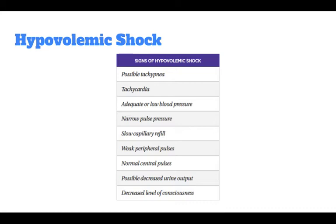While volume repletion is somewhat straightforward in adults, great care must be taken when administering intravenous fluids to children and infants. Careful estimates should be made concerning the amount of volume lost, the size of the person, and the degree of the deficit. Current recommendations are to administer 20 milliliters per kilogram of fluid as a bolus over 5 to 10 minutes and repeat as needed. In hypovolemic shock, administer 3 milliliters of fluid for every 1 milliliter of estimated blood loss — a 3 to 1 ratio.